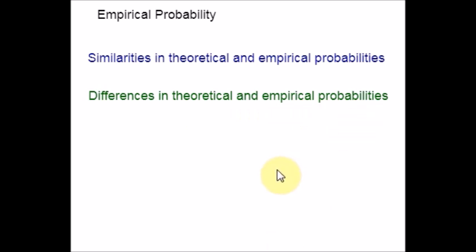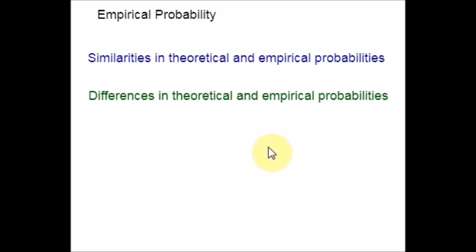You should also know the Law of Large Numbers and how it pertains to empirical probability. The Law of Large Numbers states that the greater the number of trials, the more accurate the probability. This means that empirical probability, which is calculated experimentally, will approach a theoretical or true probability with a greater number of experimental tests.